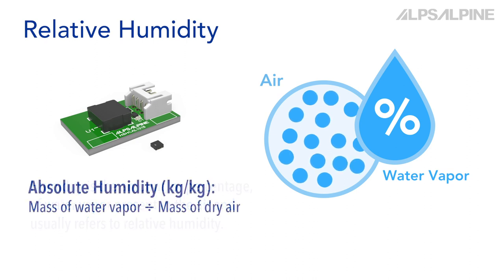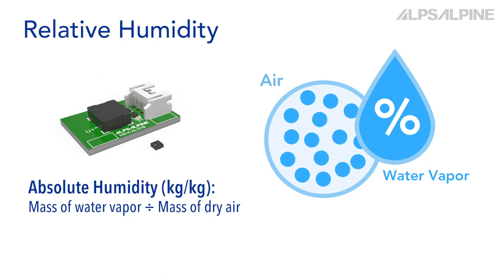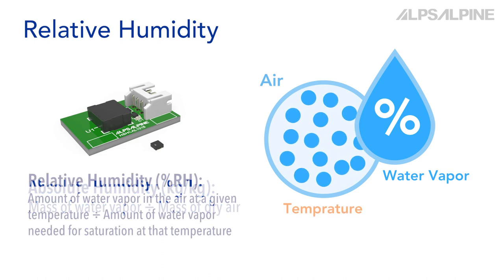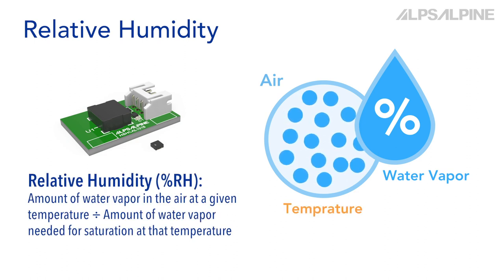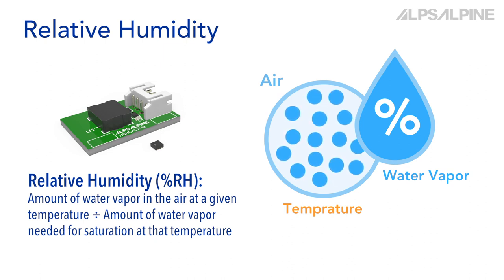Another measure is absolute humidity. Absolute humidity, in kilograms over kilograms, is defined as the mass of water vapor divided by the mass of dry air. Relative humidity, expressed as a percentage, is defined as the amount of water vapor in the air at a given temperature divided by the amount of water vapor needed for saturation at that temperature.